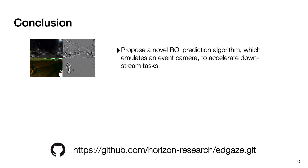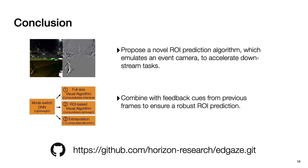In conclusion, we propose a novel ROI prediction algorithm that emulates an event camera to accelerate downstream tasks. We also find that combining event camera signals with feedback cues from previous results further improves the robustness of ROI prediction. This is the first step toward emulating event cameras to accelerate AR applications, and we hope this idea can benefit other visual tasks and make all-day VR a reality.